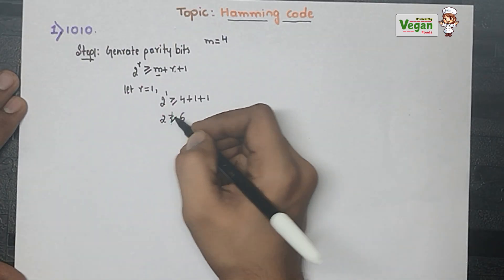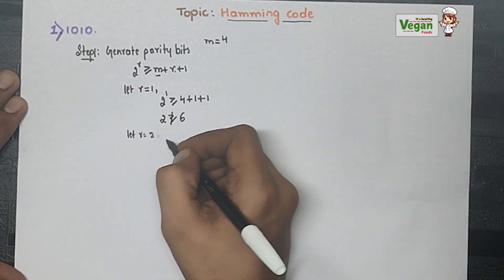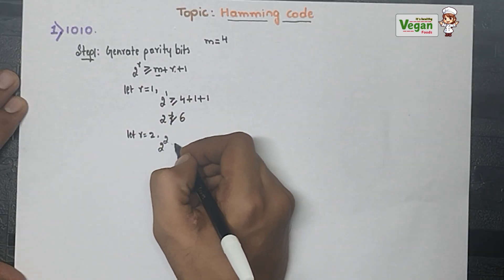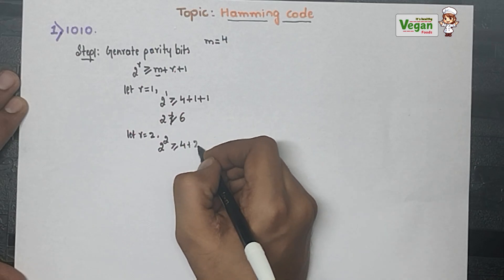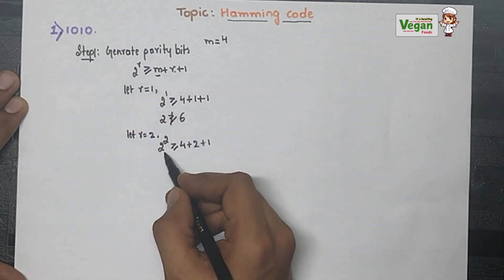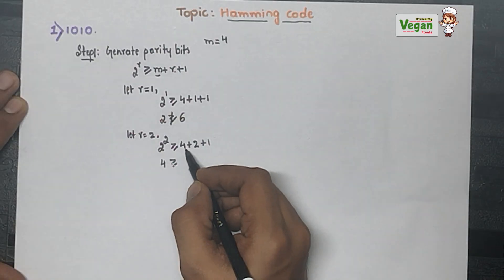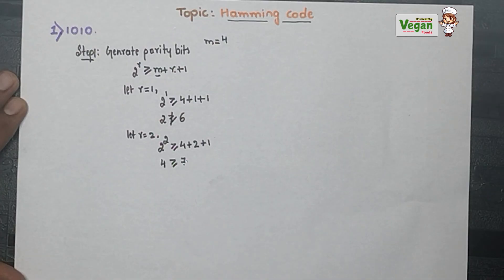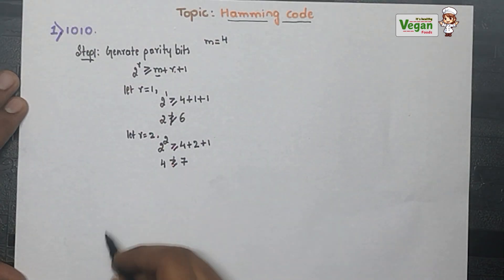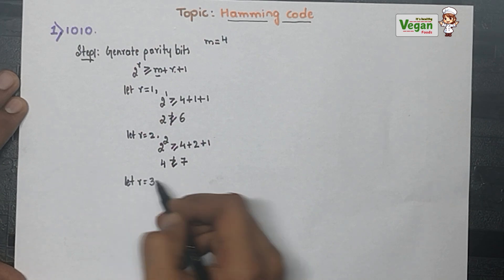Next, let r = 2. Then 2^2 ≥ 4 + 2 + 1, which gives 4 ≥ 7. This condition is also not correct, so r = 2 does not work either.